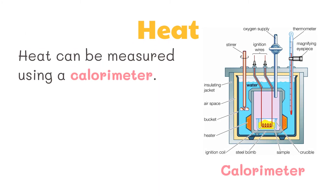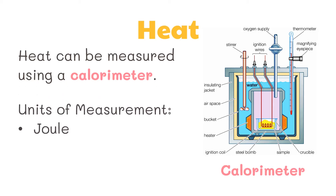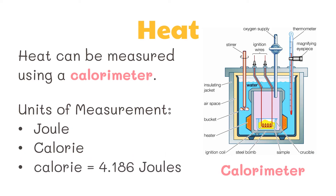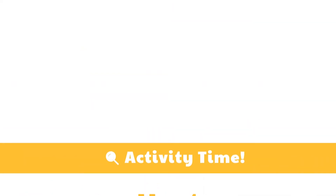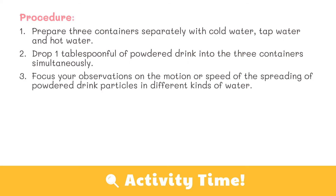A calorimeter is used in measuring the heat transferred from one body to another. The international system unit of measurement for heat is joule — the same unit we use for work and energy. However, calorie is more commonly used because it relates heat to the change in temperature. A calorie is equal to 4.186 joules, which is the amount of heat needed to change the temperature of one gram of water by one degree Celsius.